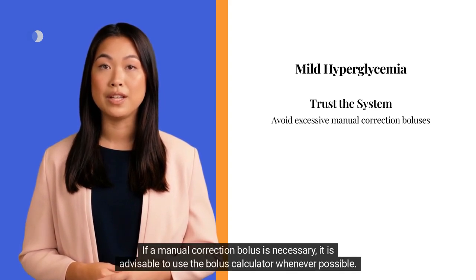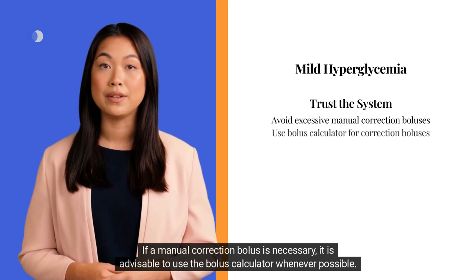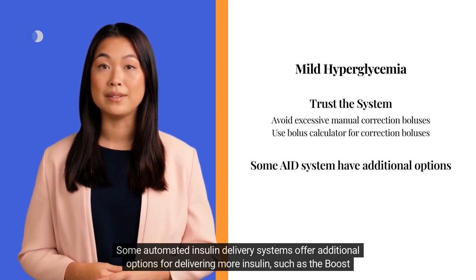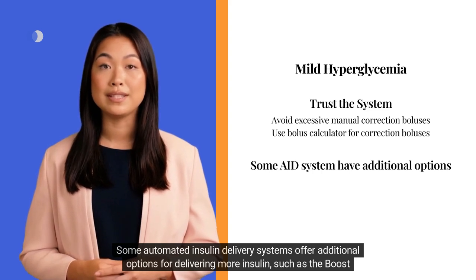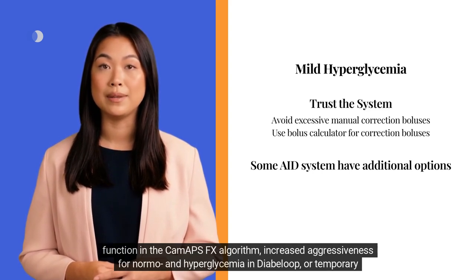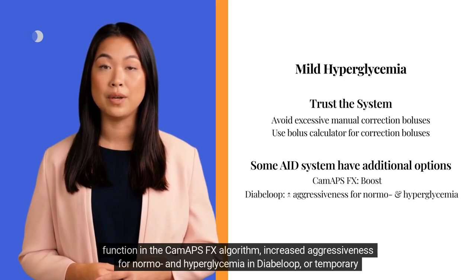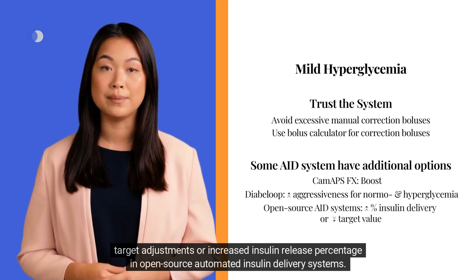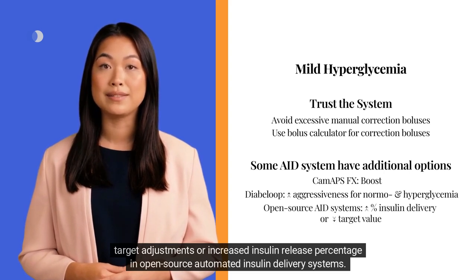If a manual correction bolus is necessary, it is advisable to use the bolus calculator whenever possible. Some automated insulin delivery systems offer additional options for delivering more insulin, such as the boost function in the CAM-APS-FX algorithm, increased aggressiveness for normo and hyperglycemia in Diabeloop, or temporary target adjustments or increased insulin release percentage in open-source automated insulin delivery systems.